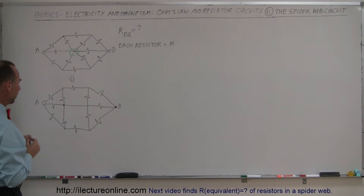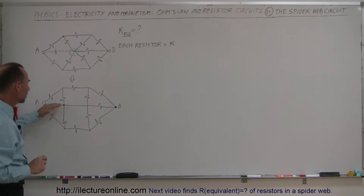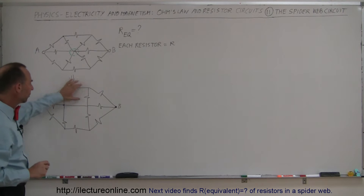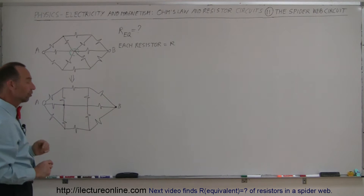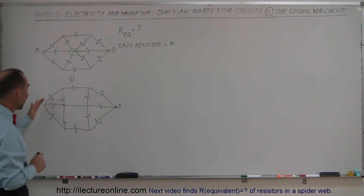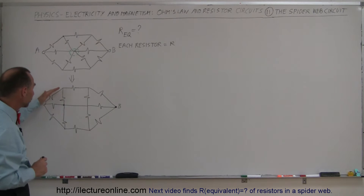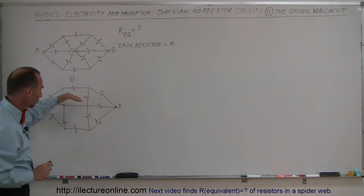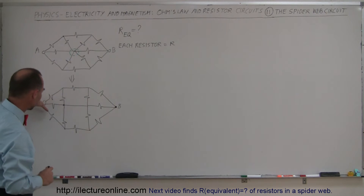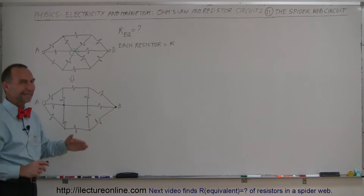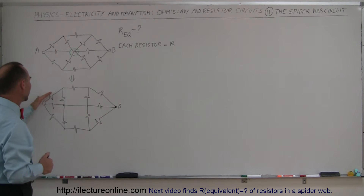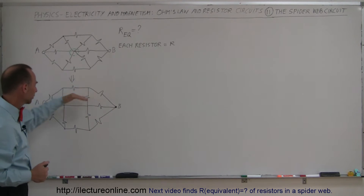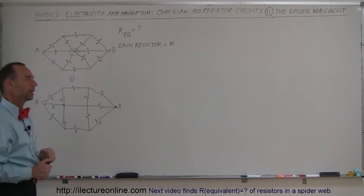Now, what to do? You do see perfect symmetry here between the top side of the circuit and the bottom side of the circuit. So what we can say is that the exact same amount of current will go through the top side as through the bottom side — because there's perfect symmetry. If it was one amp coming through here, there will be one amp coming through here.